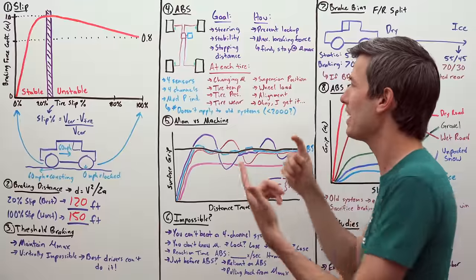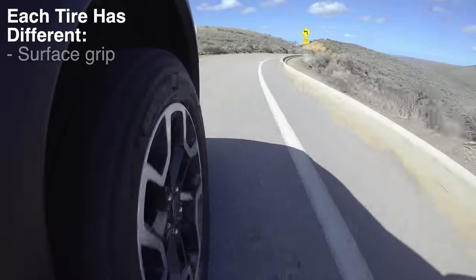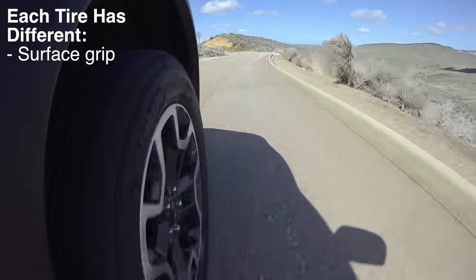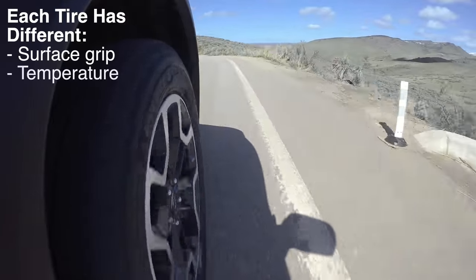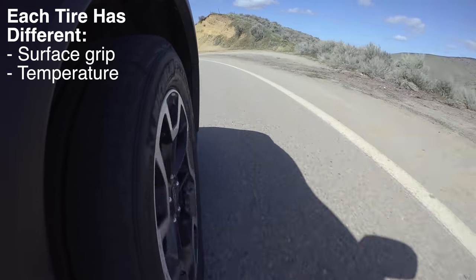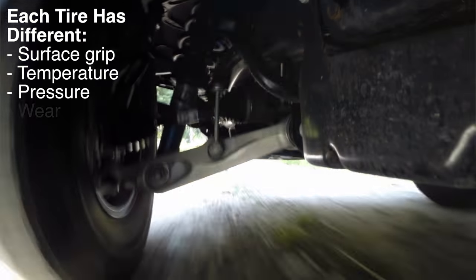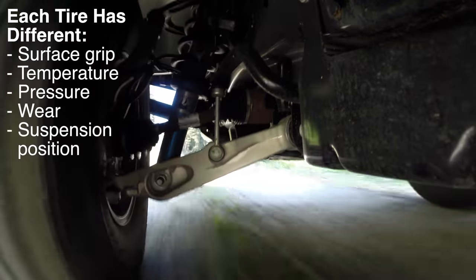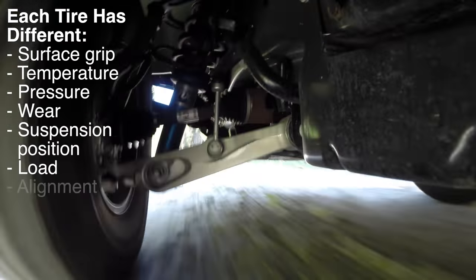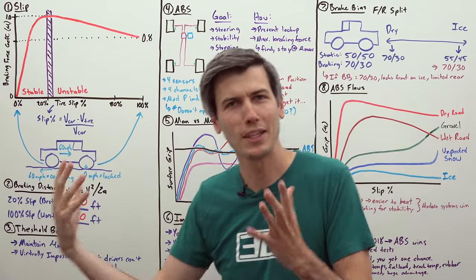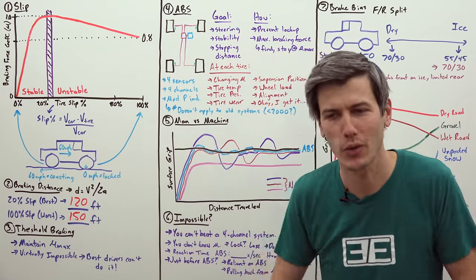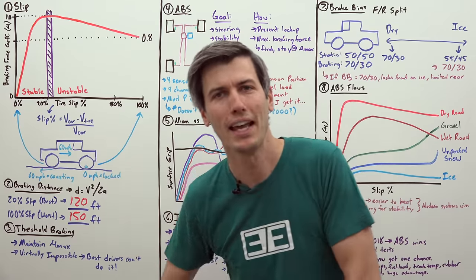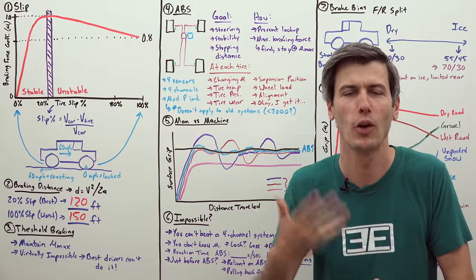So think about it. At each tire, you have changing surface conditions, right? You have different levels of grip. You have different tire temperatures. That provides different levels of grip. You have different tire pressures. Each tire will have different wear. You will have different suspension positions at each wheel. You'll have different loading at each wheel. You'll have different alignments. I think you get it. The point is that each wheel, there will be different levels of grip and ABS can account for this while you cannot.